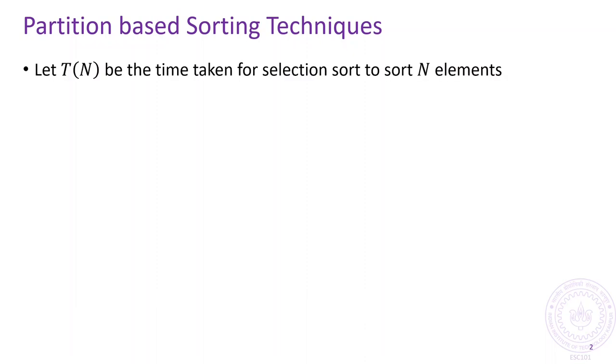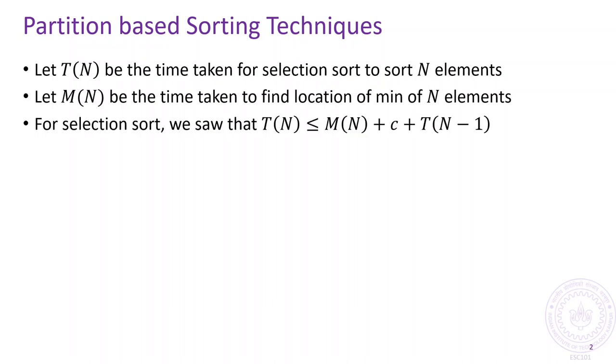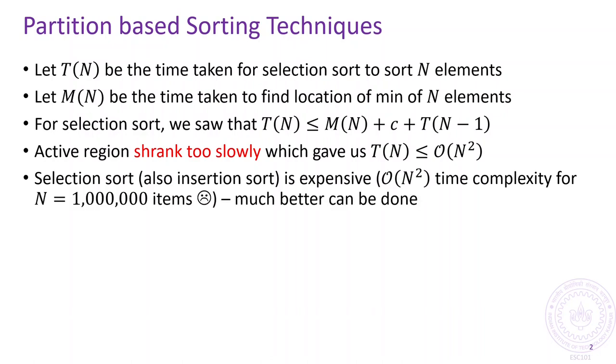Recall that in each step of selection sort, we found the minimum element in the active range before doing a swap and shrinking the active range by a single element. This rate of shrinking the active range is too slow and what led to the order n squared time complexity of the selection sort algorithm. This is unacceptable for large arrays, say those with millions of elements.